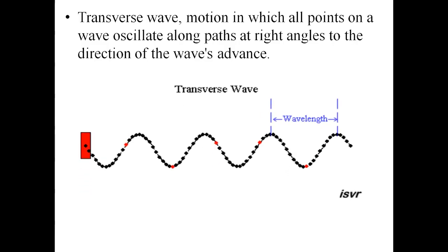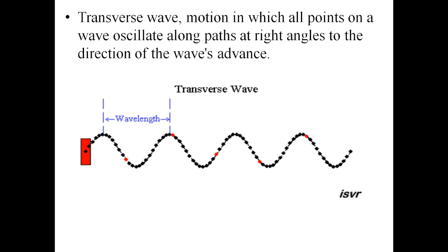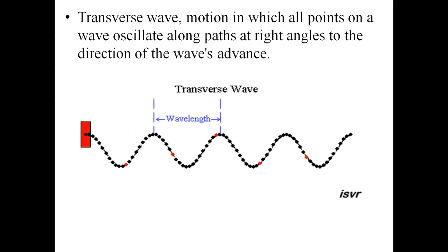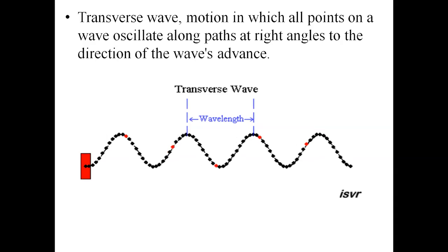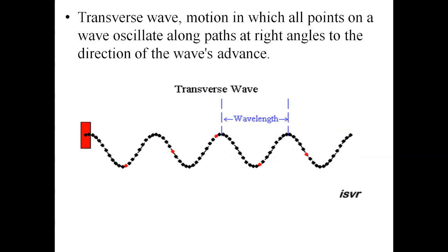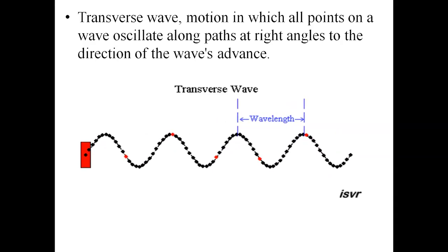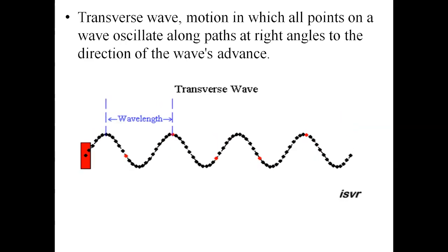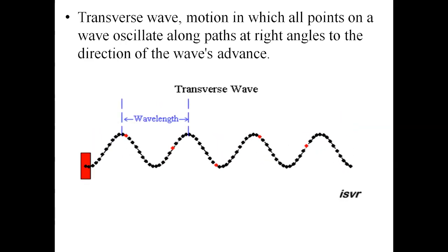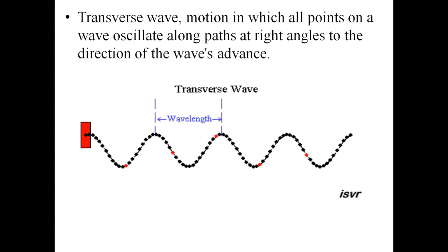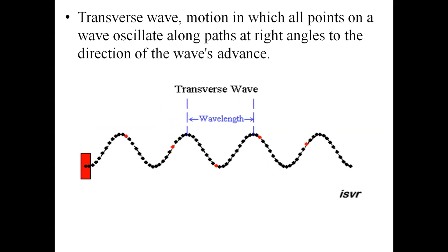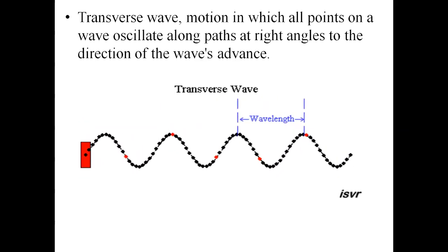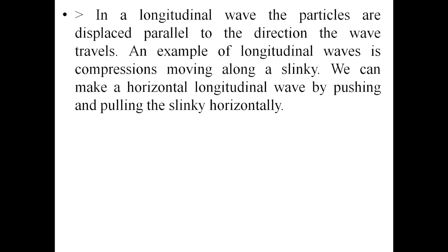This is well understood from the animation. The red dotted particles indicate the vibration of the particles, and you can see the propagation of the wave. The wave is propagating in one direction, and the red color box shows it is moving exactly at right angles to the propagation — this is called a transverse wave.